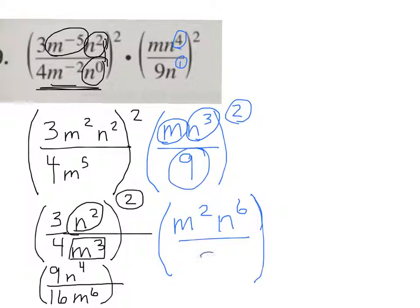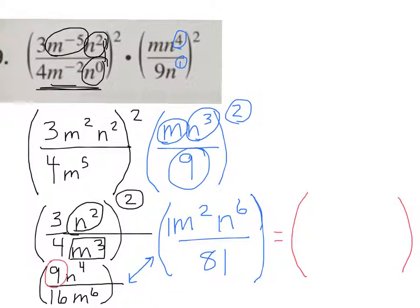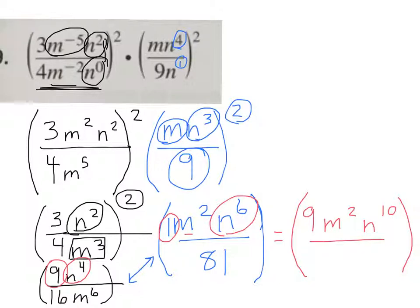9 squared is 81. Now I need to multiply these two. On top, my coefficient is understood to be 1. I'm going to multiply and put my result in red. 9 times 1 is 9. There's nothing to multiply the m by on top, so I'm going to write m squared. And then n to the 4th times n to the 6th is n to the 10th — when you multiply like bases, you add the exponents. Then I'm going to divide by 16 times 81, which is 1,296. And m to the 6th has nothing to multiply by, so I'll write m to the 6th.